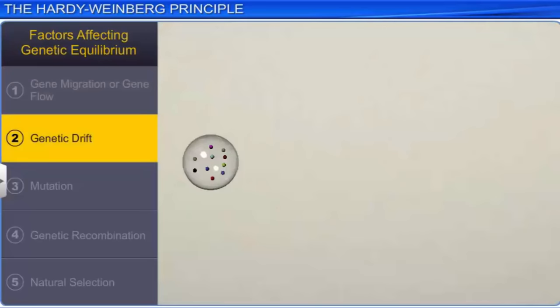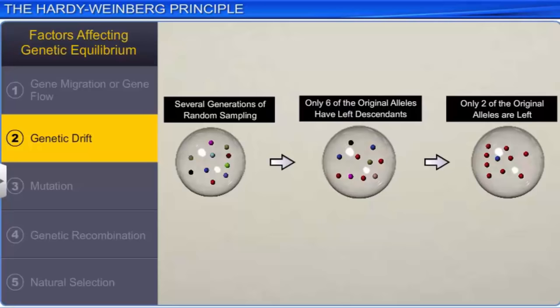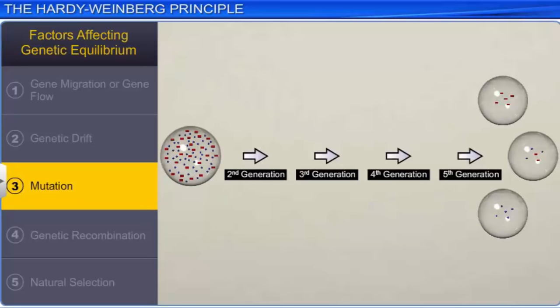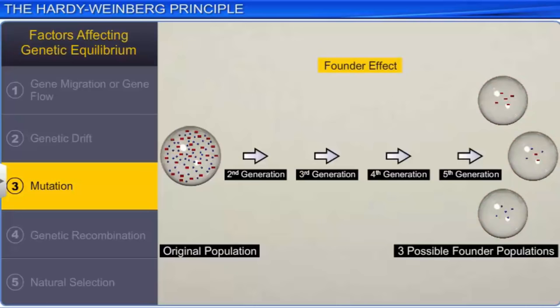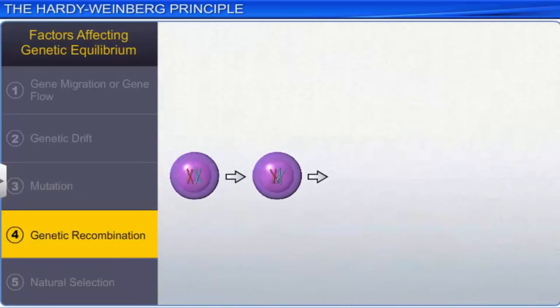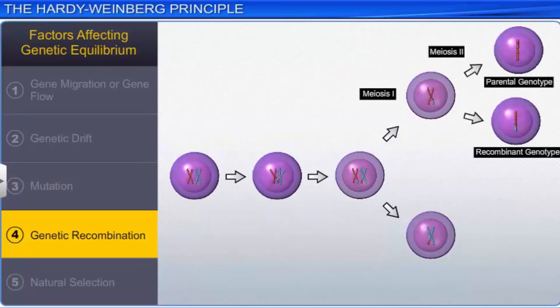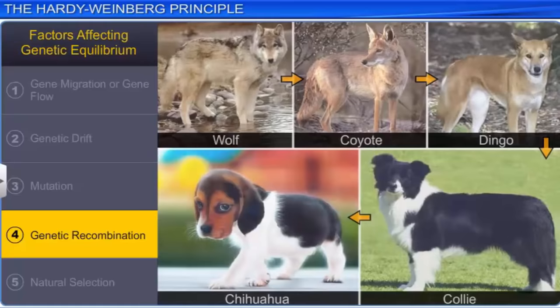Another factor that affects genetic equilibrium is genetic drift, which is a change in the relative frequency with which a gene variant occurs in a population due to random sampling and chance. Mutation is another factor that affects genetic equilibrium. On some occasions, the change in allele frequency due to mutation is so different in the new sample of the population that they become a different species. In this case, the original drifted population becomes the founder, and the effect is known as the founder effect. Genetic recombination leads to variations in offspring, and if this variation is naturally better selected than the parental genes, it leads to speciation over a period of time.